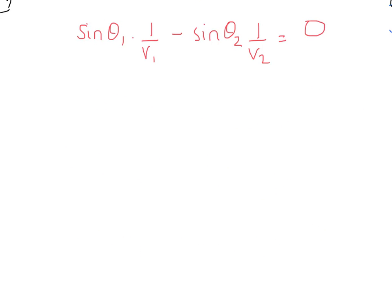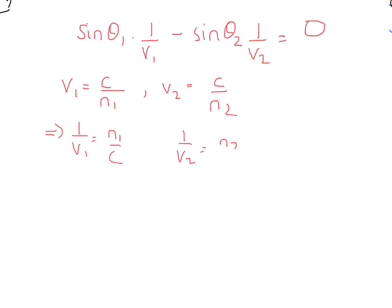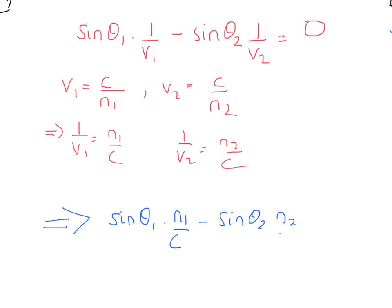At this point we need to remember a few definitions from refraction. We know that v1 is going to be c over n1, and v2 is going to be c over n2. Rearranging slightly: 1 over v1 is n1 over c, and 1 over v2 is n2 over c. Substituting those in, we get this expression here.